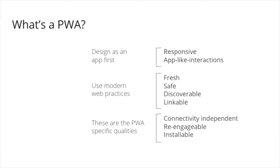That takes us to the final three pillars, which I'll focus on more. You have connectivity independence — a PWA can work when you have no internet connection, it can work offline to some extent depending on what your app is doing. You have re-engageable, meaning it can send push notifications to users, and it can be installable so a user can install it and it will appear as a native app, but it's actually running inside a browser.